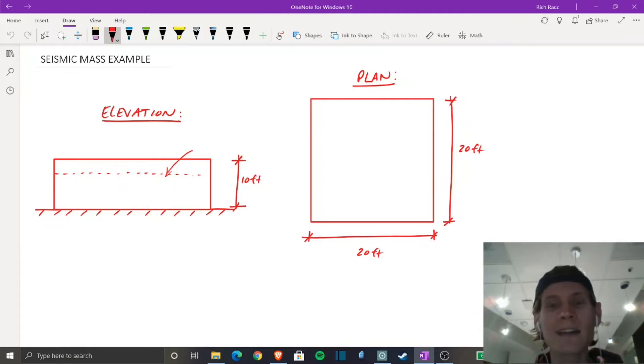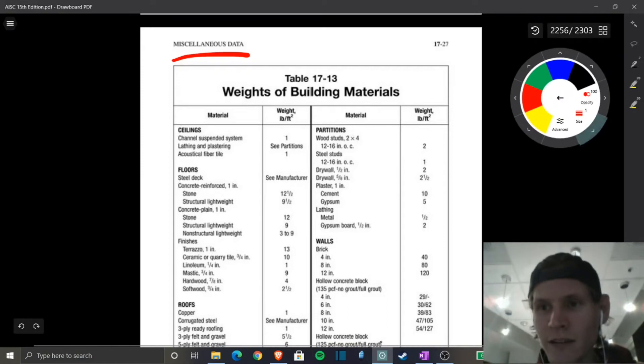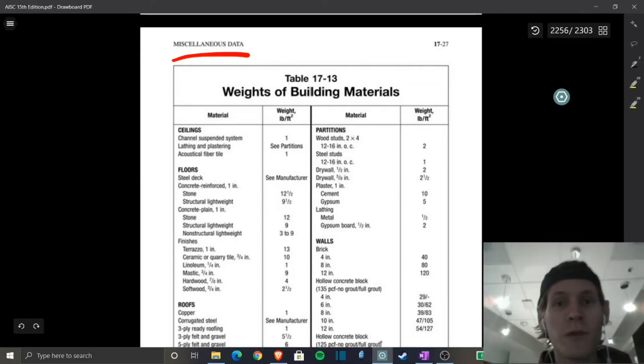And what I like to use is actually the American Institute of Steel Construction Manual, the AISC. You can either use the 14th edition or the 15th edition. Today, I'm going to jump into a PDF that's the 15th edition, but they both have the same table. So let's hop right over. So here we are, table 17-13. And this is miscellaneous data.